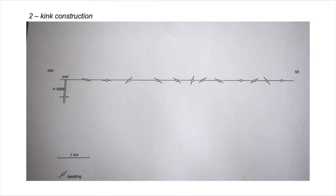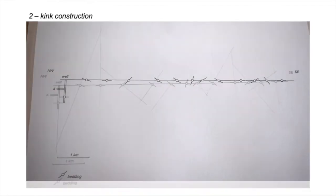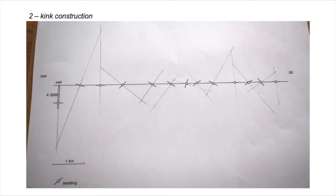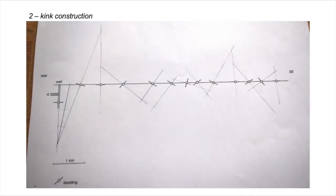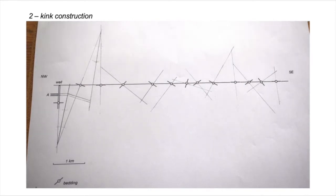Here's our basic section again. We can construct a series of lines that are perpendicular to bedding orientations measured across the profile, and it's the bisectors of these lines that will define kinky fold axial traces. These axial traces act as mirror planes by which the bedding will deflect from limb to limb, and the limbs themselves will be dip panels whose orientation is defined by the bedding readings.